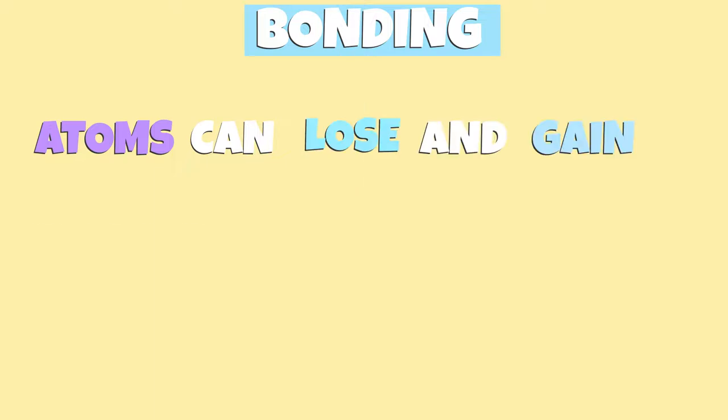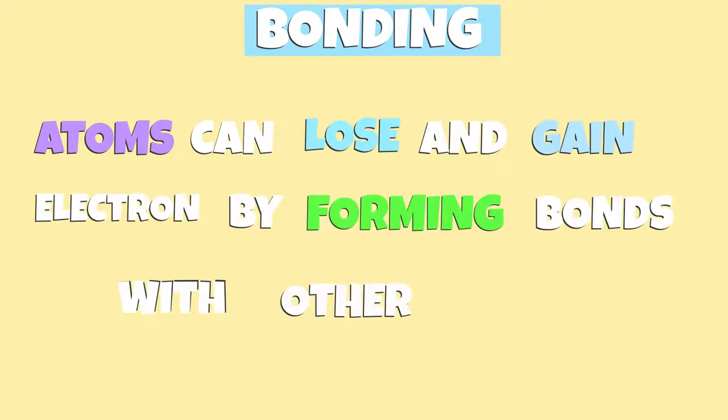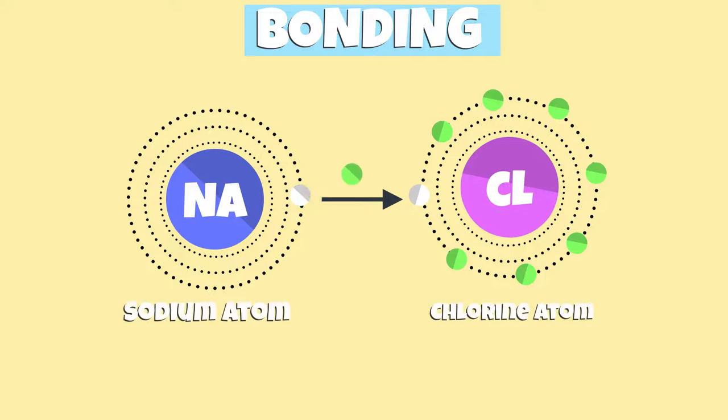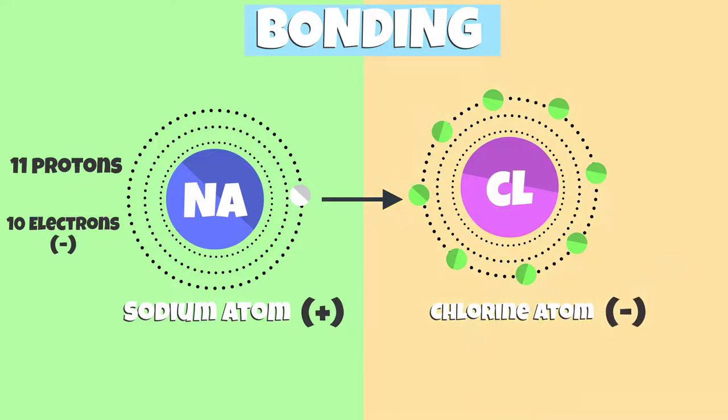Atoms can lose and gain electrons by forming bonds with other atoms. When an atom loses an electron, it becomes positively charged because there are fewer electrons in the atom and electrons are negative. When an atom gains an electron, it becomes negatively charged because there are more electrons in the atom.